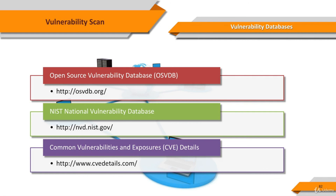CVEdetails.com is a free CVE security vulnerability database and information source. You can view CVE vulnerability details, exploits, references, Metasploit modules, a full list of vulnerable products, CVSS score reports, and vulnerability trends over time. CVE (Common Vulnerabilities and Exposures) is the system that provides a reference method for publicly known information security vulnerabilities and exposures.